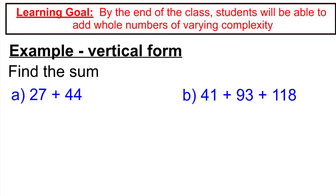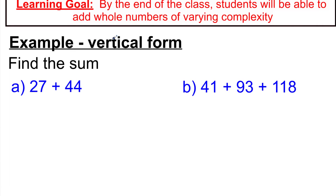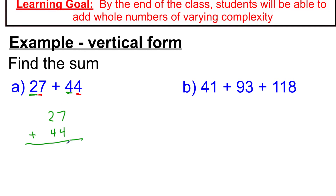Now let's look at horizontal form — when the numbers are written straight across instead of up and down. When this happens, recognize that the 7 and the 4 are in the ones place in each of their numbers, so when you rewrite them the 7 and 4 must be right on top of each other. The 2 and the 4 are both in the tens place, so stack them too. Adding down the column: 11, carry a 1, then 1 and 2 and 4 is 7. So 71 is my sum.